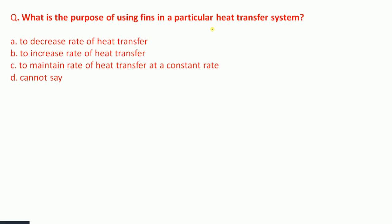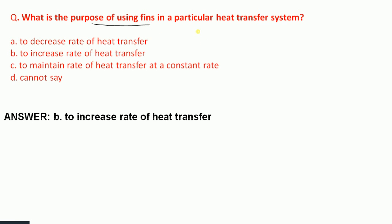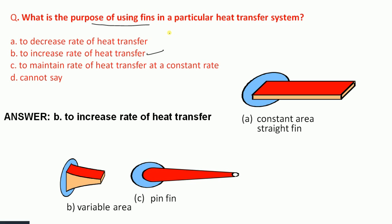The four options are: to decrease rate of heat transfer, to increase rate of heat transfer, to maintain rate of heat transfer, or cannot say. The purpose of using pins in a particular heat transfer system is to increase the rate of heat transfer — that is option B. There are four types of pins, and the main purpose is to increase heat transfer from a hot surface.